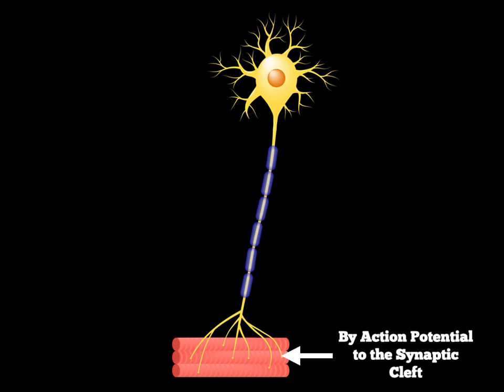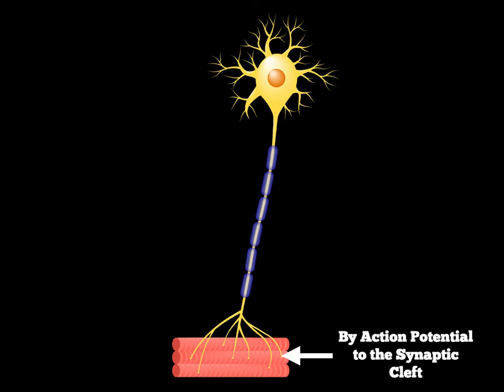And it will reach the synaptic cleft. So we're imagining this wave of electricity going down the motor neuron to the synaptic cleft — that gap.